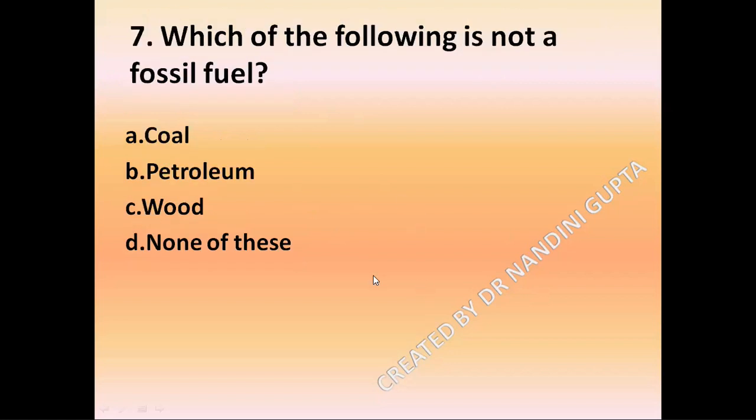Question 7: Which of the following is not a fossil fuel? Option A, coal; option B, petroleum; option C, wood; option D, none of these. The answer is wood — coal and petroleum are fossil fuels, but wood is not.